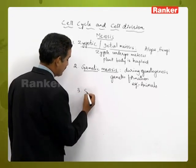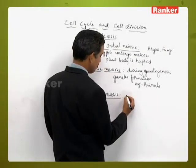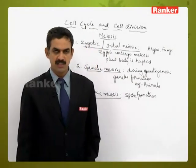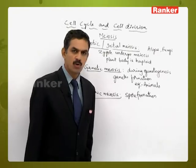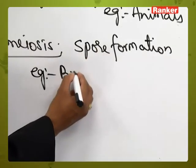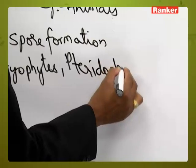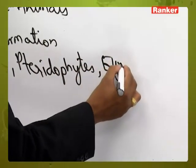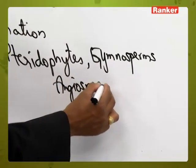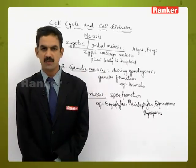The third type is sporic meiosis, where meiosis occurs during spore formation. It may occur in the spore mother cell, micro spore mother cell, or mega spore mother cell, resulting in micro spores or mega spores. This is observed in higher plants like some bryophytes, tracheophytes, gymnosperms, and angiosperms. These are the three types of meiosis based on the stage at which meiosis takes place in the life cycle of organisms.